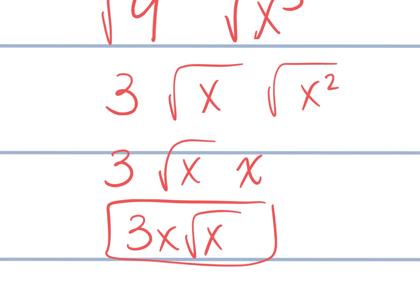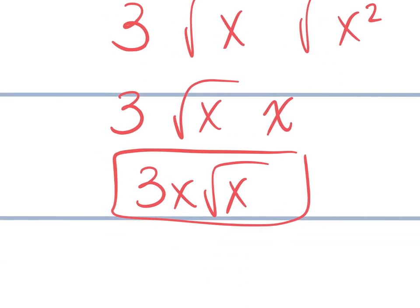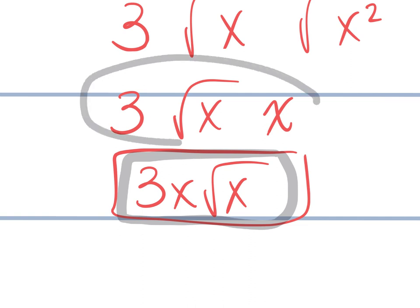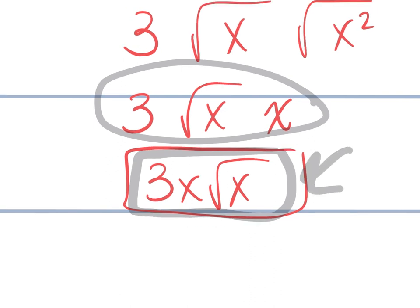Sancia asks: why did I put the x next to the three? Because we write our answers with all the terms that are not under a radical first and all the terms that have a radical last. If you left it in a different order, it's not a big deal, but get in the habit of writing it this way.